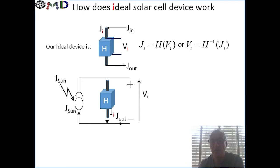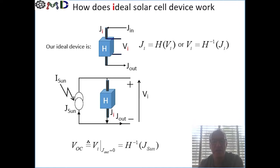Basically here we don't connect any external load, so this is the open circuit condition. And under these conditions we can say that the open circuit voltage is really the IV characteristic when the current is the current driven by the Sun.